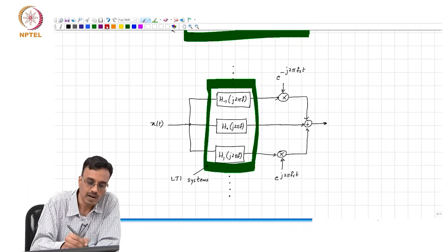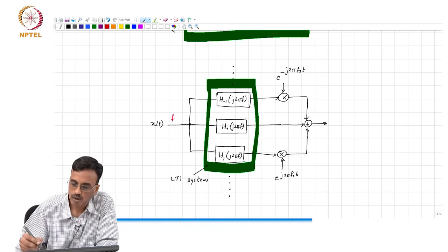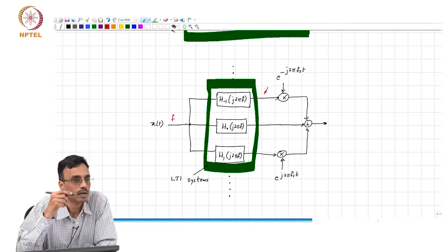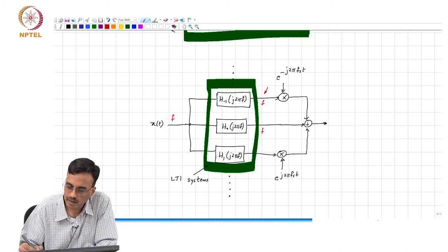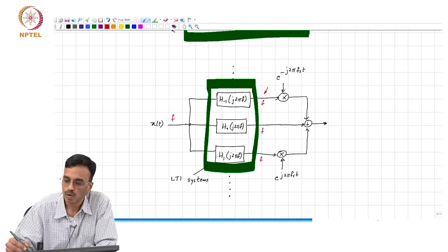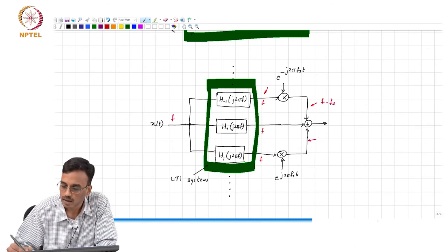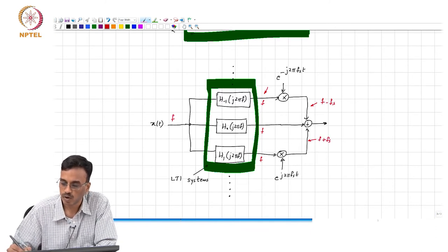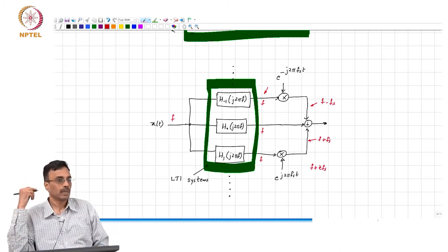For example, if you put in an input tone at frequency f, the frequency content at the filter output will be f only. Everywhere in the filter bank the content will only be f. But if you take a sinusoidal tone at f and multiply it by e to the minus j 2 pi f_s times t, the content will be f minus f_s. And here it will be f plus f_s. In general, what comes out will be of the form f plus k times f_s.